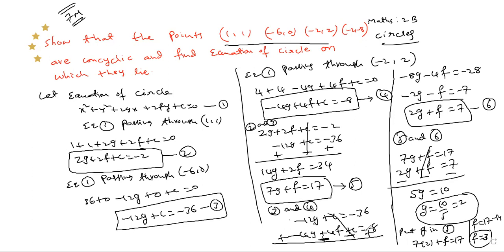So we have g = 2 and f = 3. Now we need to find c by substituting these values into one of the equations.